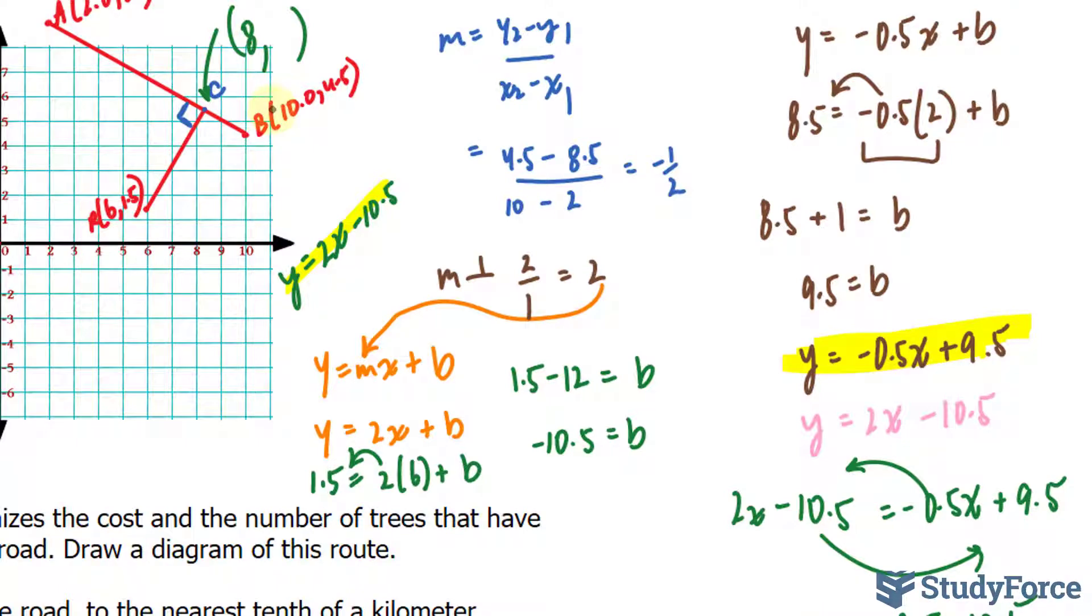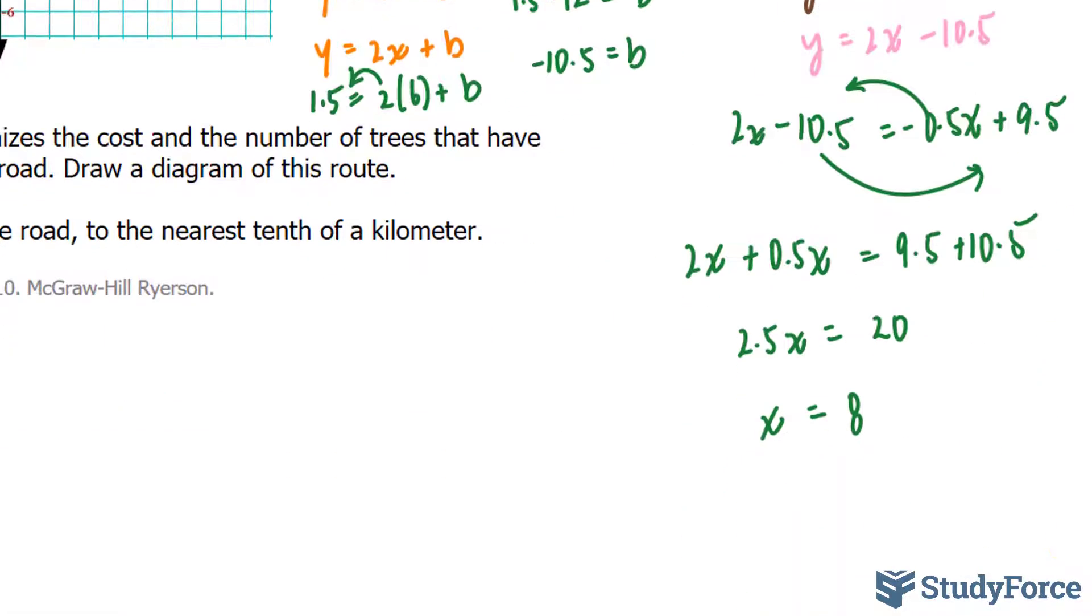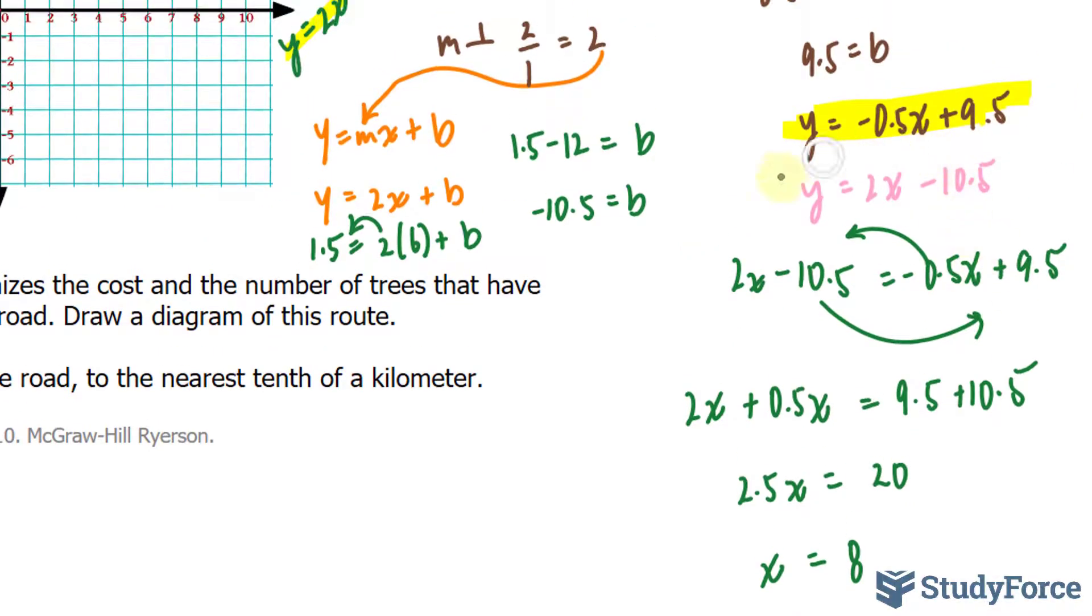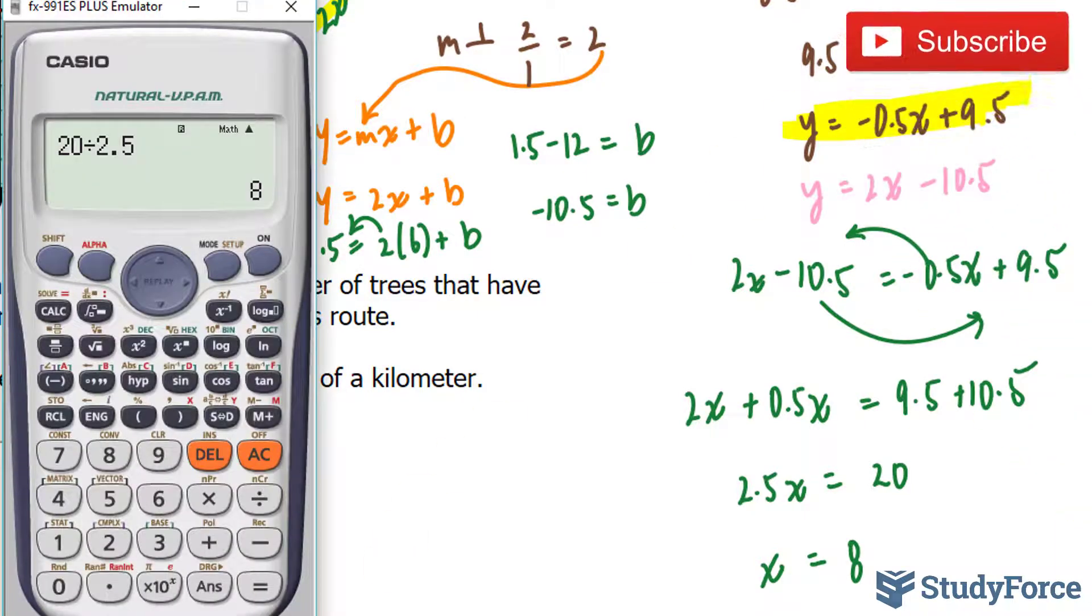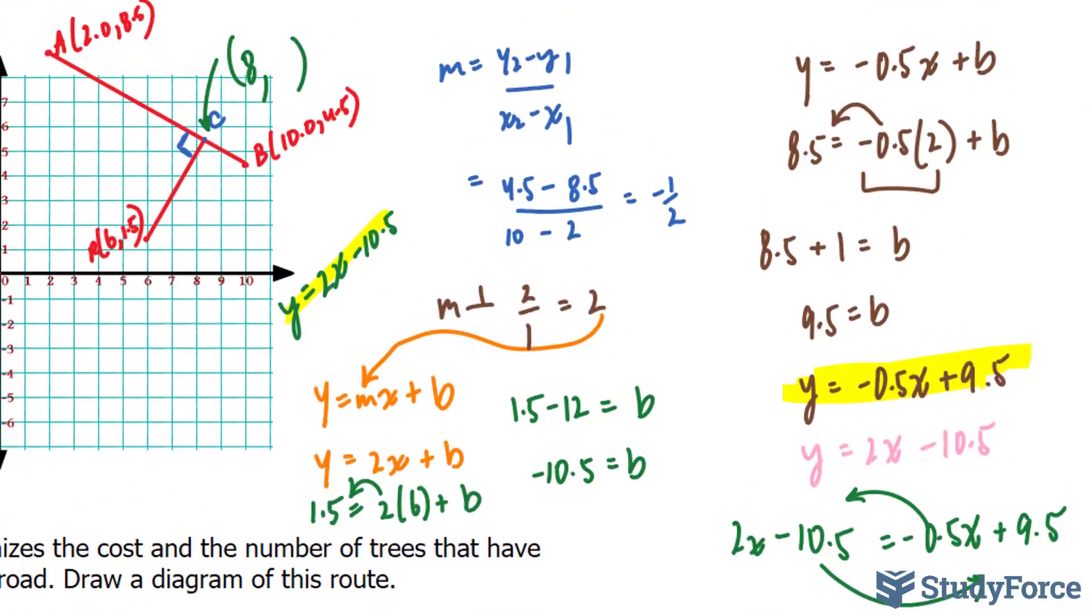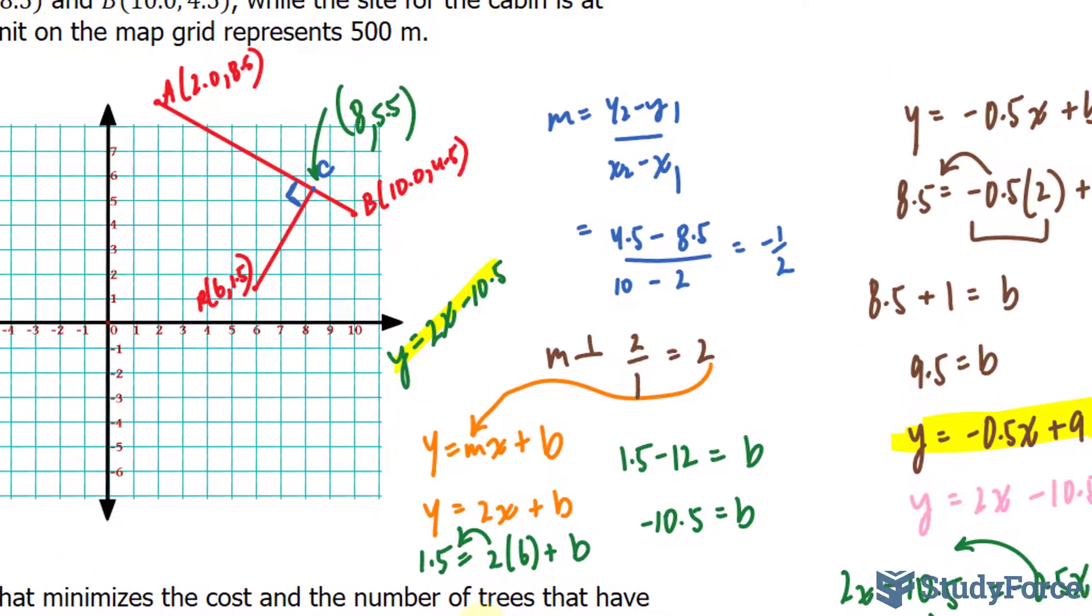To find the y coordinate, we substitute 8 into any of the equations that we used. I'll substitute it back into here or you could have substituted it into here. So we have 2 times 8 minus 10.5. That gives us 5.5. Let's see if that was accurate. Almost.